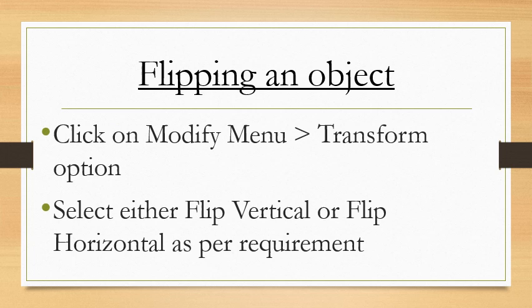Now we learn how we can flip an object. To flip an object, first we have to click on the Modify menu and then click on the Transform option. After that we have to choose either flip vertical or flip horizontal, whichever way we want to flip the image or object — vertical ho ya horizontal, usme se apni requirement ke anusar option choose kar lena hai.